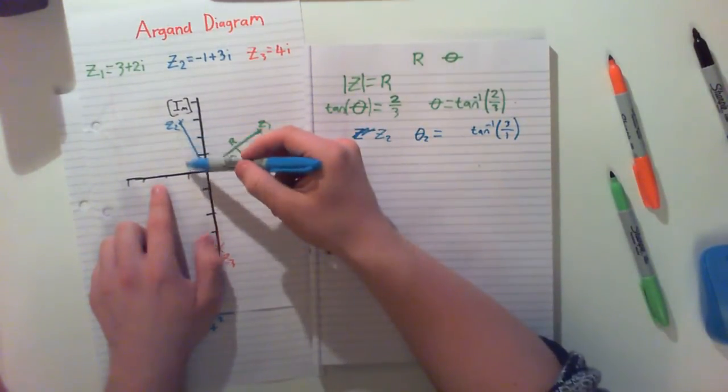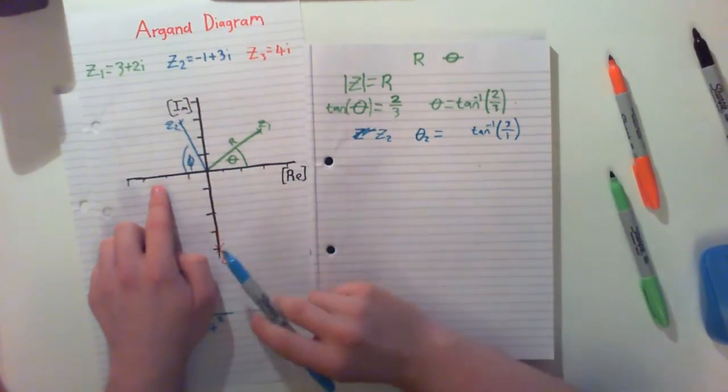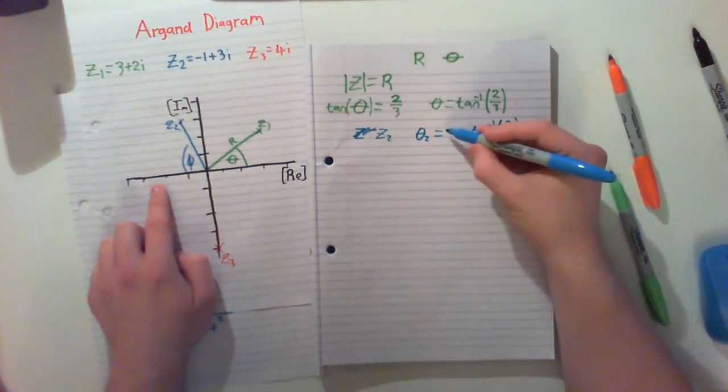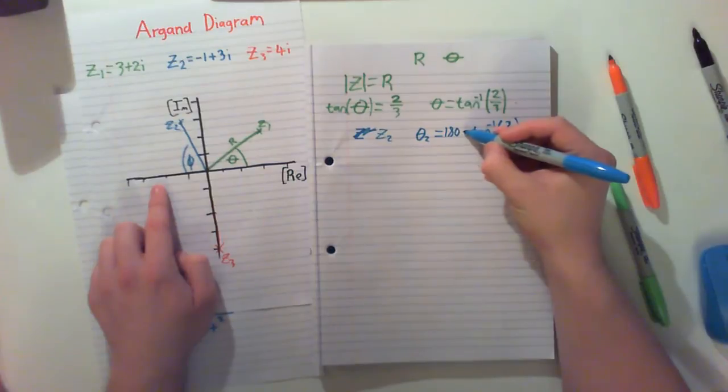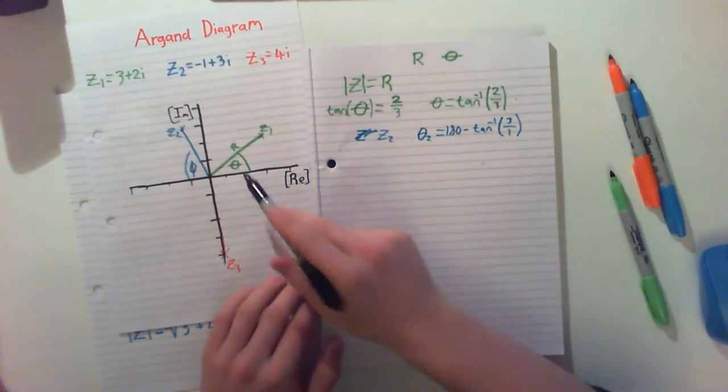But that will give us our angle here. That gives an angle here, say, phi. So what we do is we take 180 minus this.